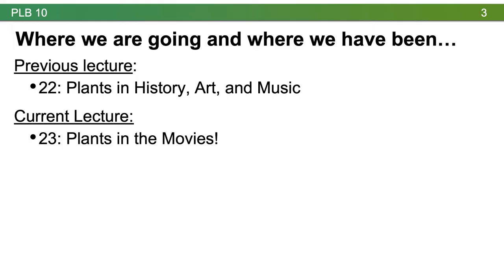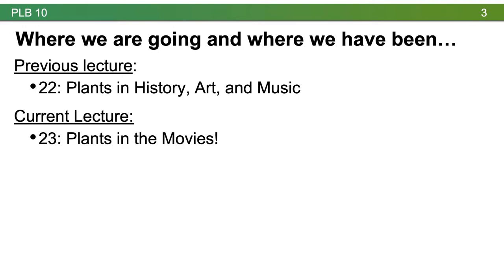In the last lecture we talked about plants in history, art, and music. In this lecture we'll talk about plants in the movies. I've separated the plants in film into different eras, so we're going to start with the 1950s and 1960s.